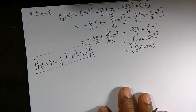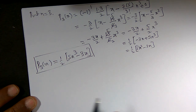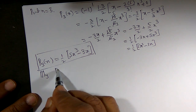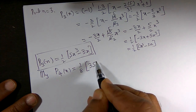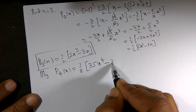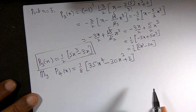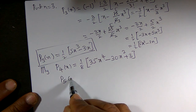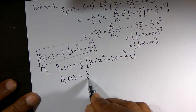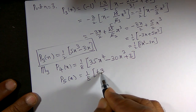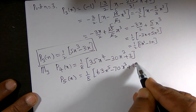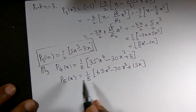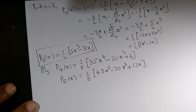Similarly, replacing n by 4 and simplifying: P₄(x) = (1/8)(35x⁴ − 30x² + 3). Replacing n by 5: P₅(x) = (1/8)(63x⁵ − 70x³ + 15x). These polynomials play an important role when solving examples. In the next video I will solve one or two such examples. Thank you.